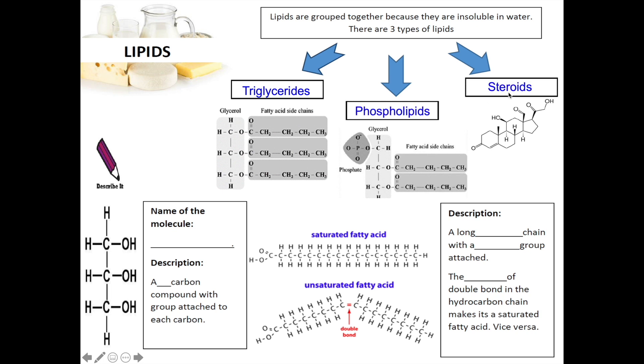As you can see, triglycerides and phospholipids look very much similar. In triglycerides, one glycerol molecule is connected to three fatty acid side chains. However, in phospholipid, one glycerol molecule is only connected to two fatty acid side chains. The empty carbon within the glycerol molecule is connected to a phosphate group.